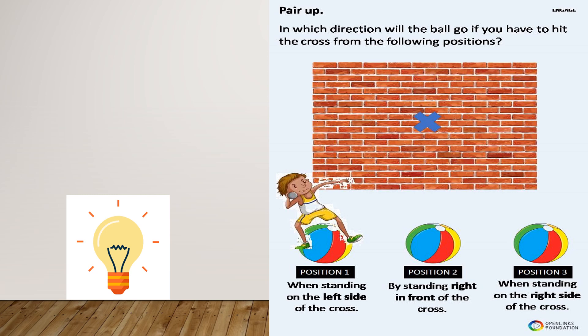Now observe this picture. A boy wants to throw a ball towards the wall. The question is: in which direction will the ball go if you have to hit the cross from the following positions — position one, position two, or position three? From which side will you hit? Think about this.